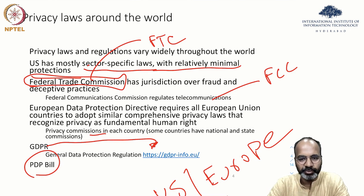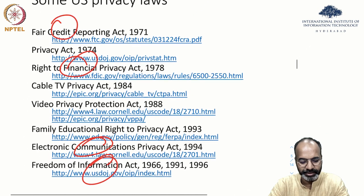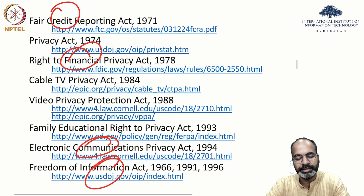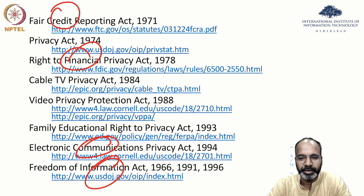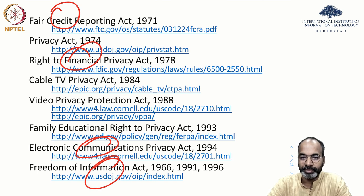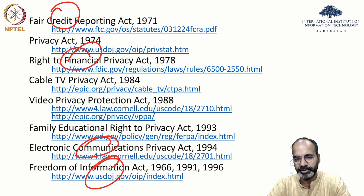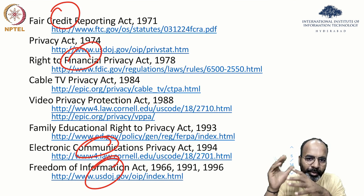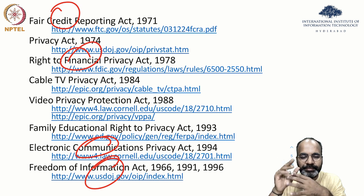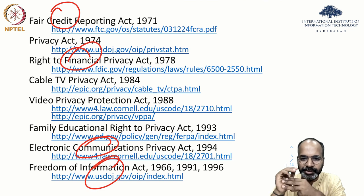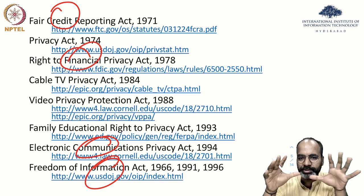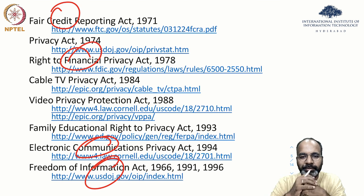Let's look at US privacy acts more closely. The first is the Fair Credit Reporting Act — looking at credit cards and different aspects of the credit system, how information should be collected. In general, all of them fit the concepts we've seen: fair information practices, limitation of collection, how information will be used, how long it will be kept. All of that is the same, but sectoral implementations differ. There's also the broader Privacy Act, and the Right to Financial Privacy Act, which covers banking and citizens' financial information.